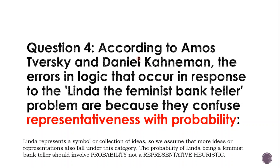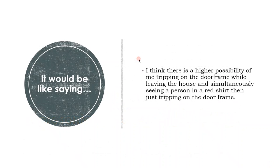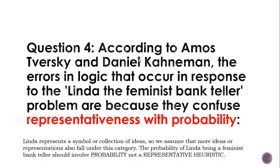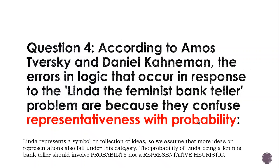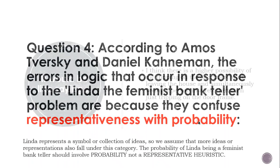The probability of Linda being a feminist bank teller should involve probability and not a representative heuristic. This is like saying there's a high probability of tripping on the doorframe while simultaneously seeing a person in a red shirt than just tripping over the doorframe. You can see this fault in reasoning: you've got Linda the bank teller, you think she's a feminist, but when you translate that reasoning to something unrelated to representative heuristics or stereotypes, you can see it's much the same thing.